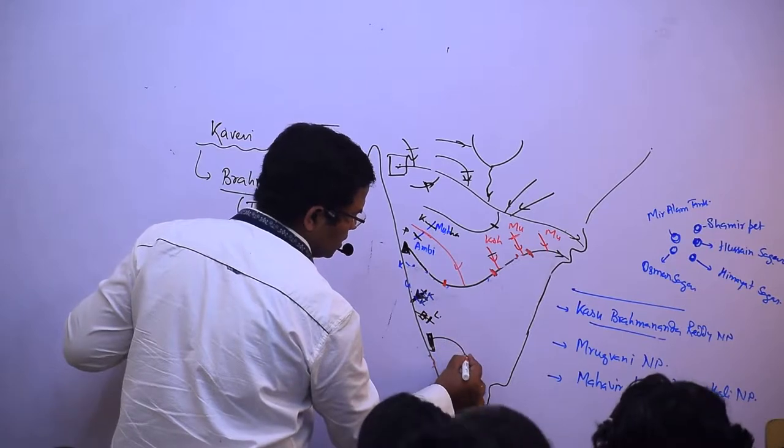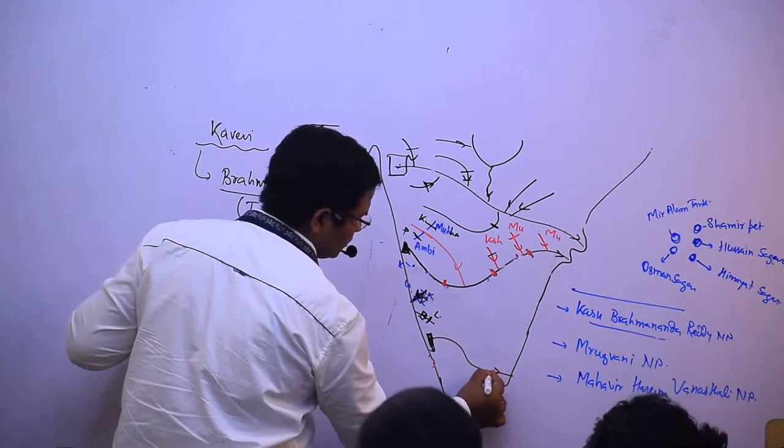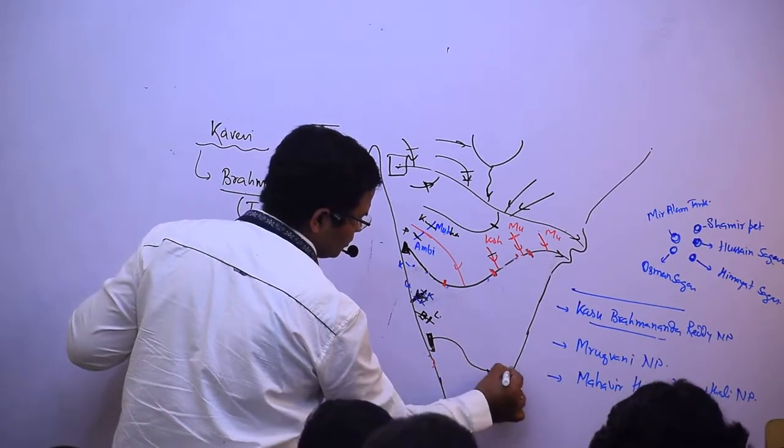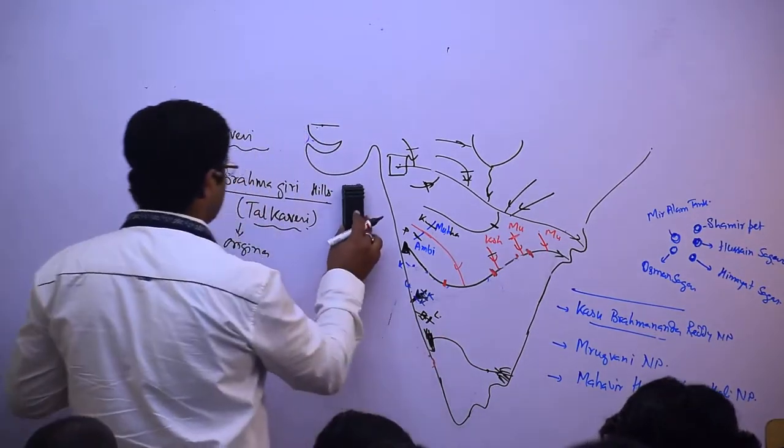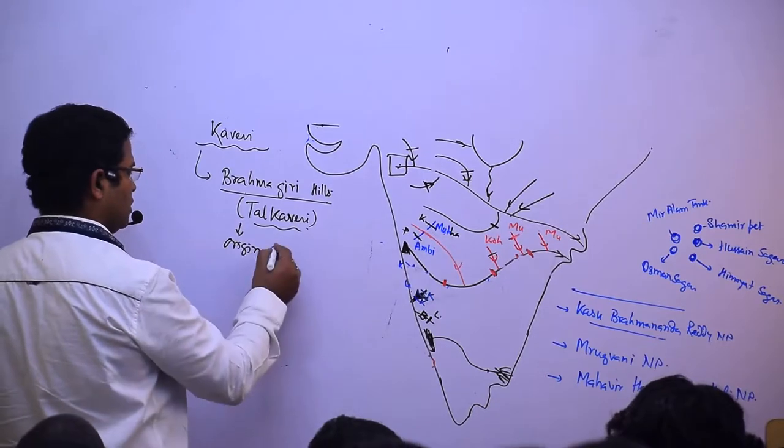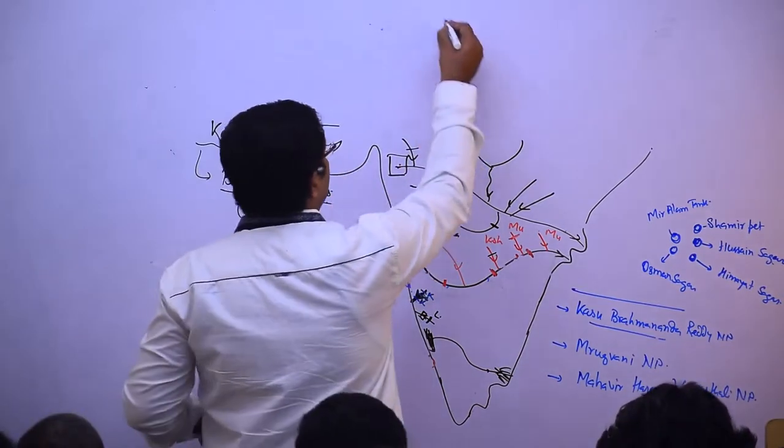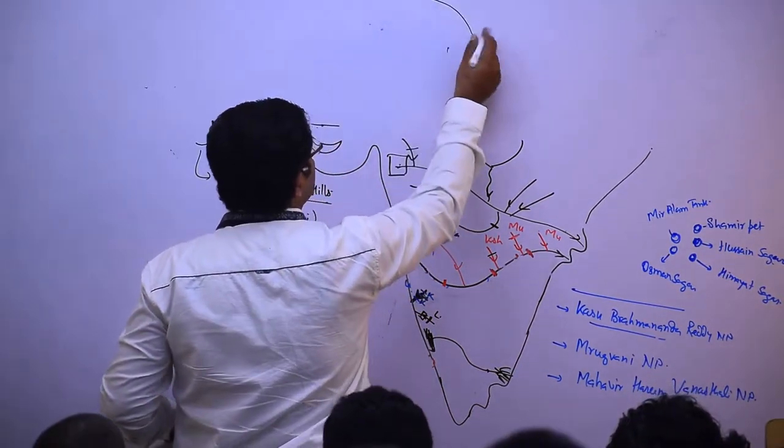It originated like this and thereafter it is making some deltas, and then it becomes bigger.